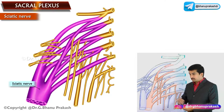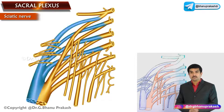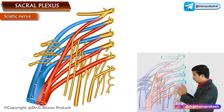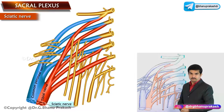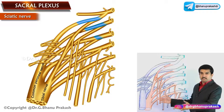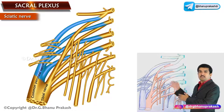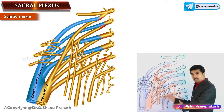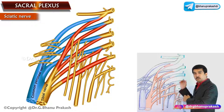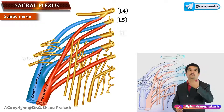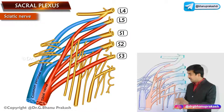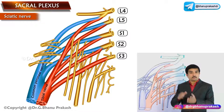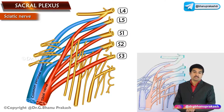The sciatic nerve consists of two nerves — common peroneal and tibial — enclosed in a common sheath. The common peroneal nerve is formed from dorsal divisions of L4, L5, S1, and S2, while the tibial component is formed from ventral divisions of L4, L5, S1, S2, and S3. The sciatic nerve will be discussed in detail separately in the individual nerve section.